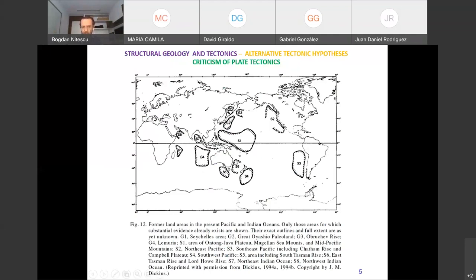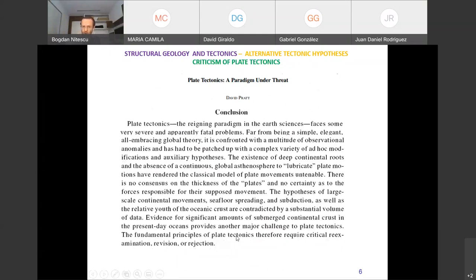All right, so here is his conclusion. Yeah. So he, he presents different observations. And he says, like talking about what Gabriel was asking says, the existence of deep continental roots and the absence of a continuous global asthenosphere to lubricate plate motions have rendered the classical model of plate movements untenable. That's what he thinks there is no consensus on the thickness of the plates, which is true, it's not, you know, we have this tomography, which shows, you know, variations.